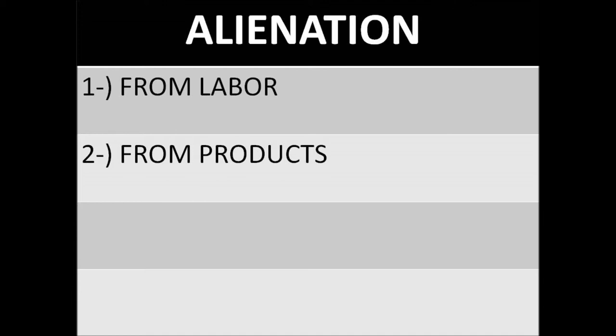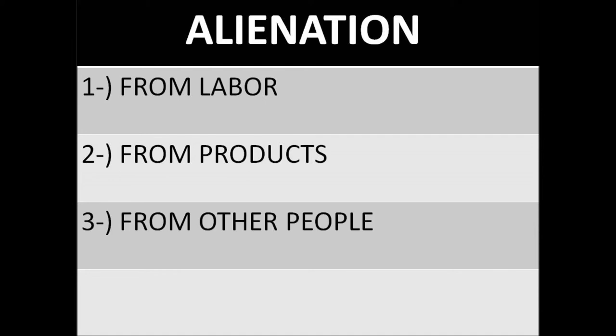3. Workers become alienated from other people. Others become objects used to make exchanges of goods and money, or competitors in the market or workplace. Money, and the commodities money represents, come to dominate human relationships.